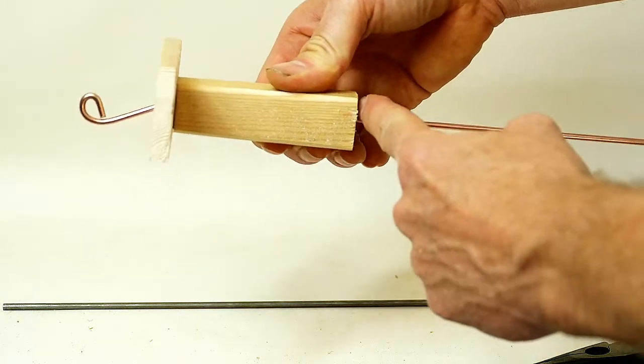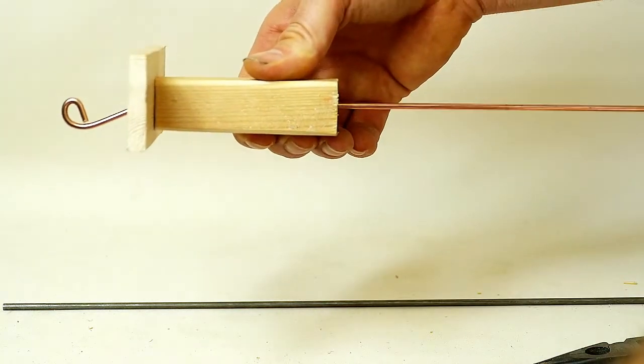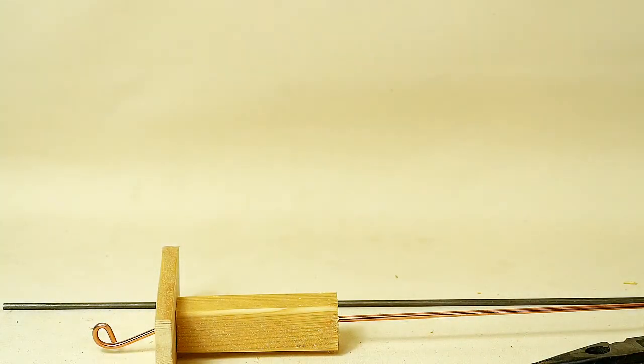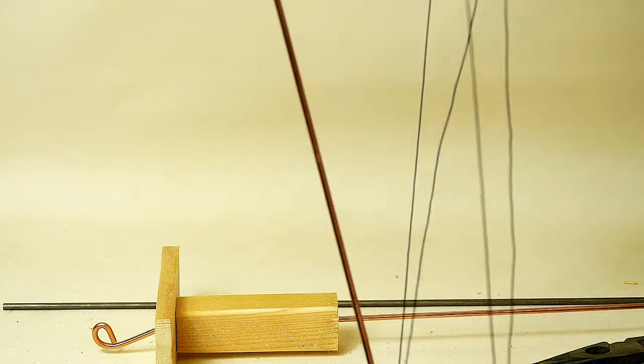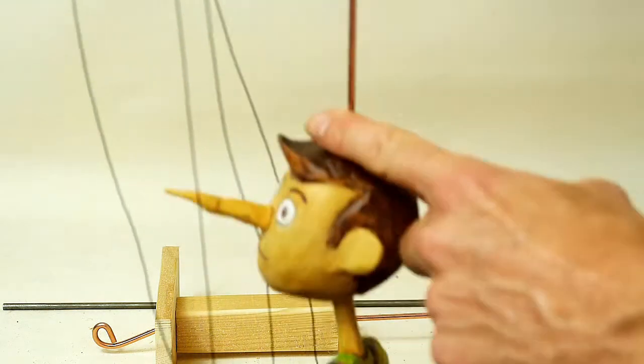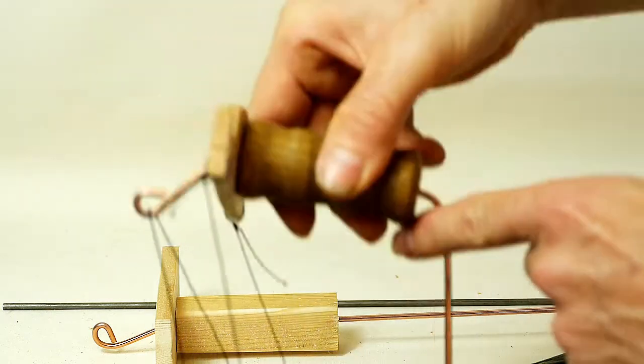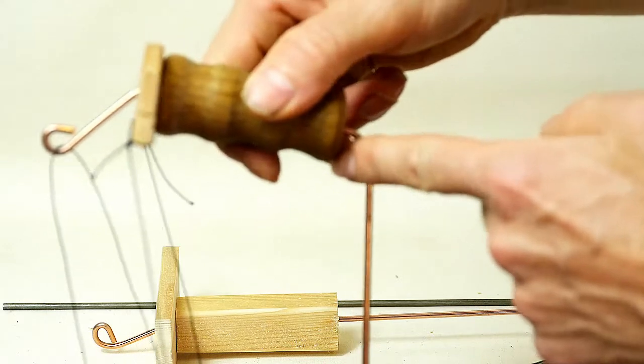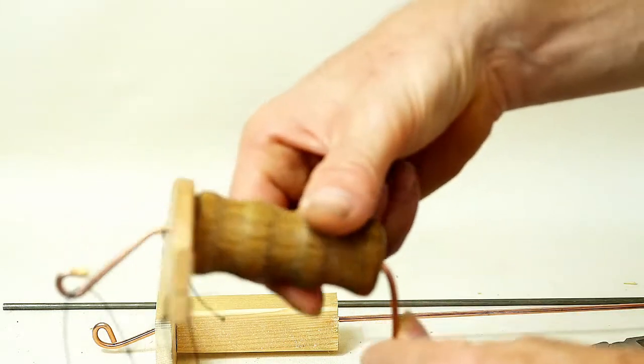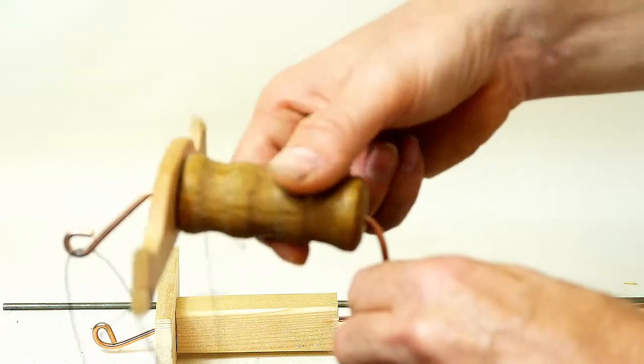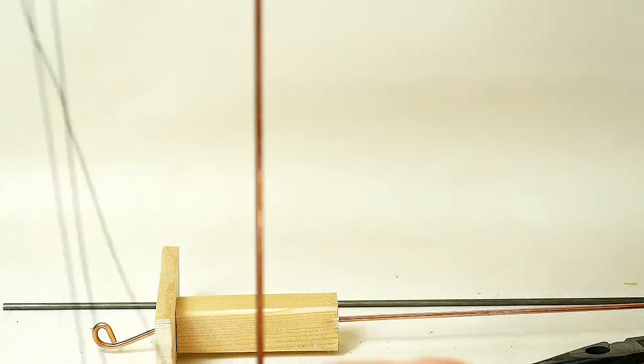So next we would bend here 90 degrees downwards, and that would create the bend which would come to the head of our puppet. So very simple, just a 90 degrees. That's what stops this from moving around too much, just locates it in place. And that's your rocker, and there it goes to the head.